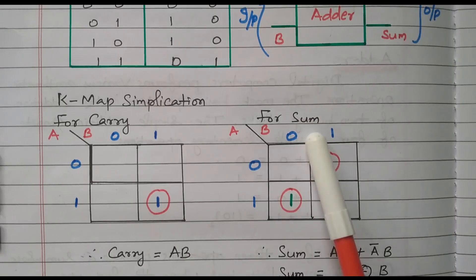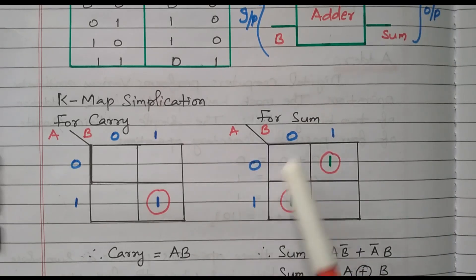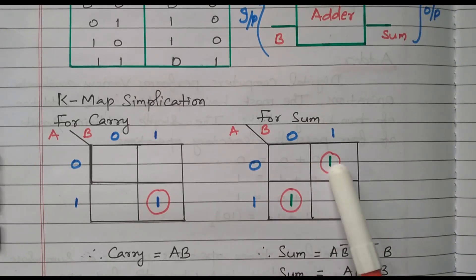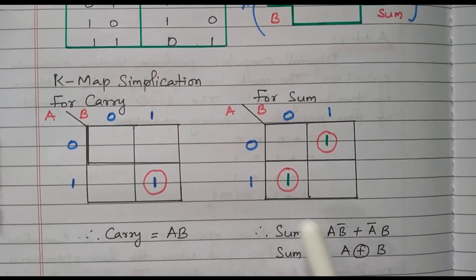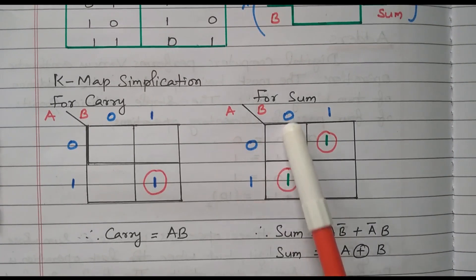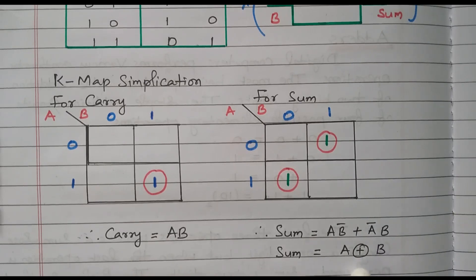For the sum K-map, again two inputs A and B. For inputs 0-1 as well as 1-0 the terms are 1; remaining terms are 0. So the sum expression is AB̅ + A̅B, which is nothing but the XOR gate — XOR gate of A and B.